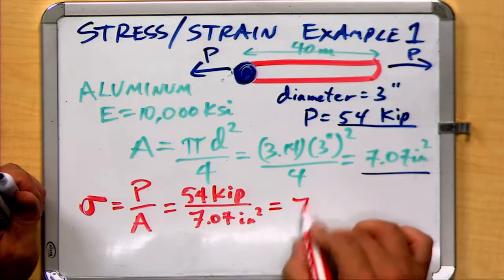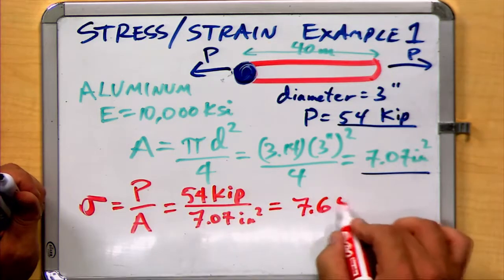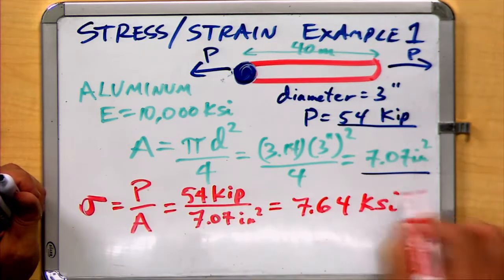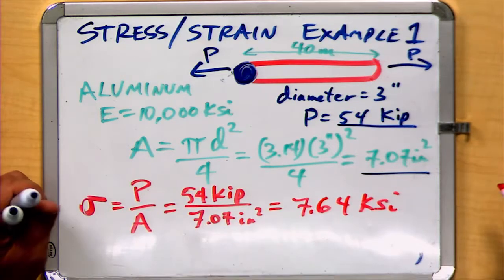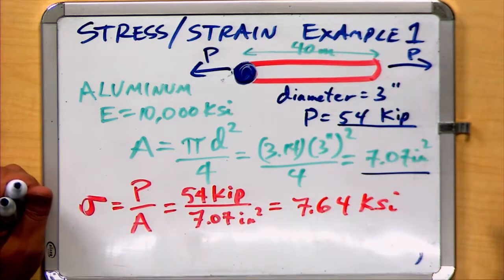When we do that, we get a value of 7.64 KSI, where the KSI stands for kilopounds per square inch.